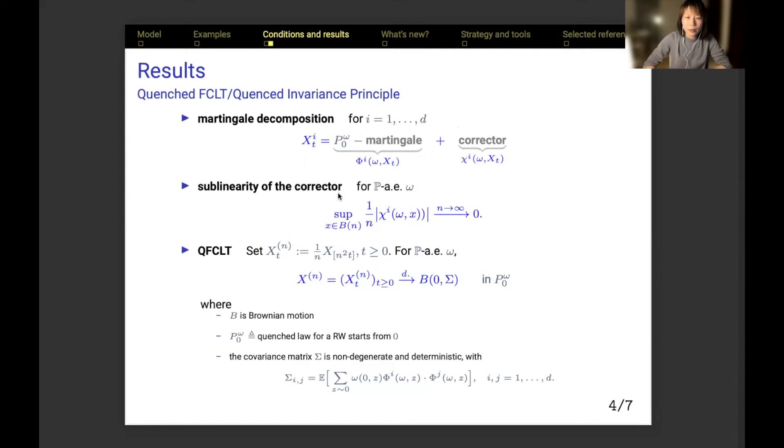Second, the corrector of the position is sublinear in the sense that its supremum inside the box is negligible when compared to the size of the box. This implies the corrector for the trajectory vanishes uniformly in quenched probability under the diffusive scaling. At last, we arrive at the quenched FCLT. Denote X^m_t the random walks under diffusive scaling. Since the corrector for the trajectory is negligible, the rescaled path can be well approximated by its martingale part, which converges in quenched law to Brownian motion with some non-degenerate and deterministic covariance matrix, the entry of which is the expectation of some weighted dot product of harmonic components.